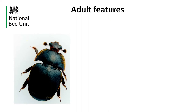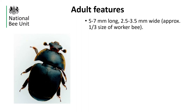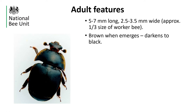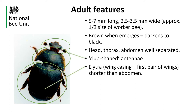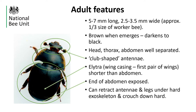Here you can see the anatomical features of an adult Small Hive Beetle. They are between five and seven millimetres long and two and a half to three and a half millimetres wide. When an adult emerges after pupation they are brown but they soon darken to black. The head, thorax and abdomen are well separated and they have a pair of distinctive club-shaped antennae. The wing cases, known as elytra, are shorter than the abdomen and this leaves the end of the abdomen exposed, which is unusual in beetles and makes Small Hive Beetle easy to identify. When threatened, the adults can retract their legs under their exoskeleton and crouch down for protection.